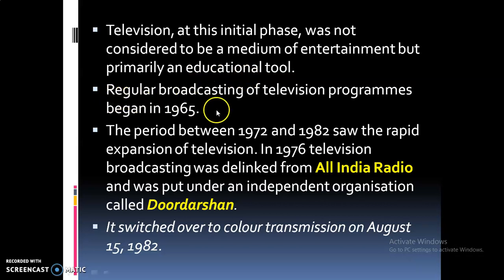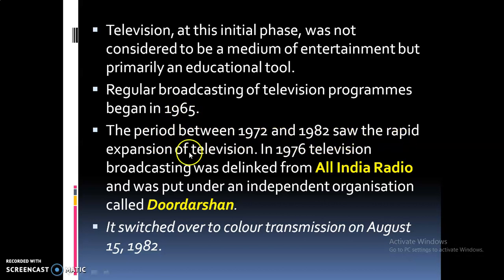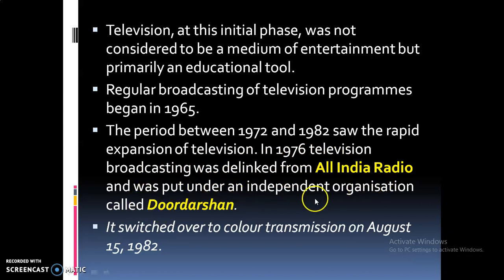Regular broadcasting of television programs began in India only in the year 1965. The period between 1972 and 1982 saw the rapid expansion of television. In 1976, television broadcasting was delinked from All India Radio and put under an independent organization called Doordarshan, which switched over to color transmission on August 15, 1982.